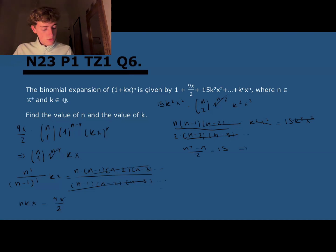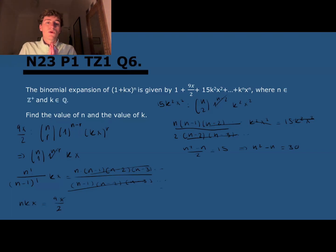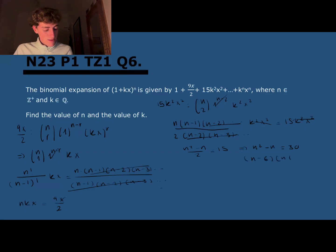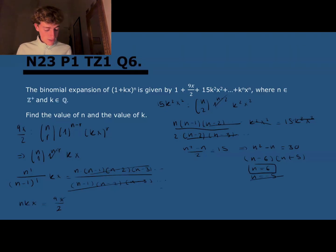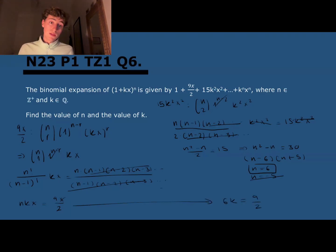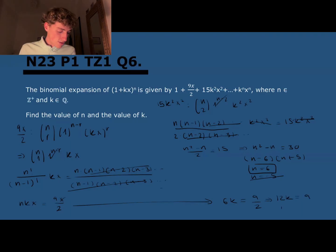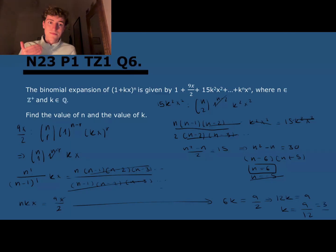Solving the quadratic n² minus n minus 30 equals 0, we factorize as (n minus 6)(n plus 5), giving n equals 6 or n equals minus 5. Since n must be positive for a binomial expansion, n equals 6. Substituting back, 6k equals 9/2. Multiplying both sides by 2 gives 12k equals 9, so k equals 9/12, which simplifies to 3/4.